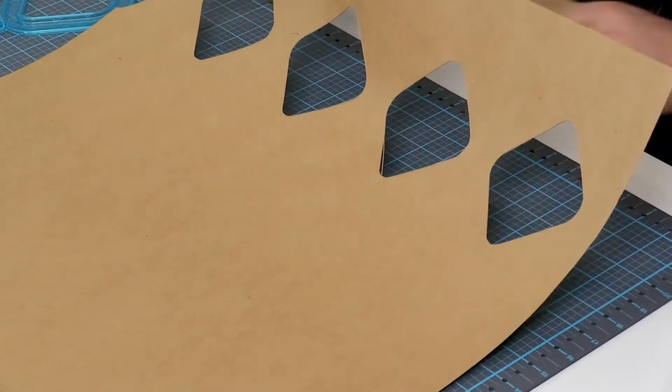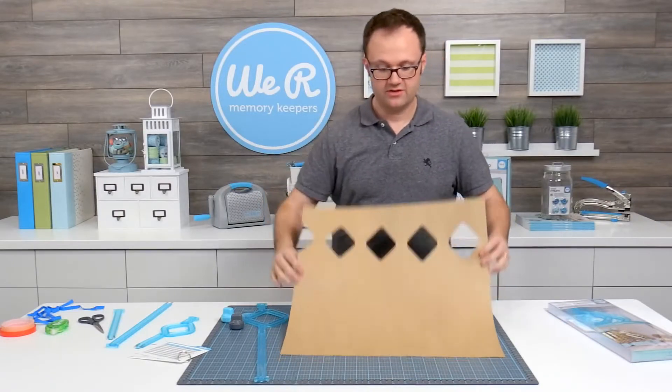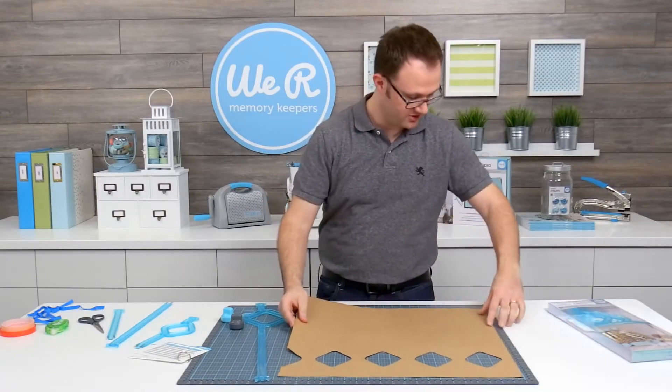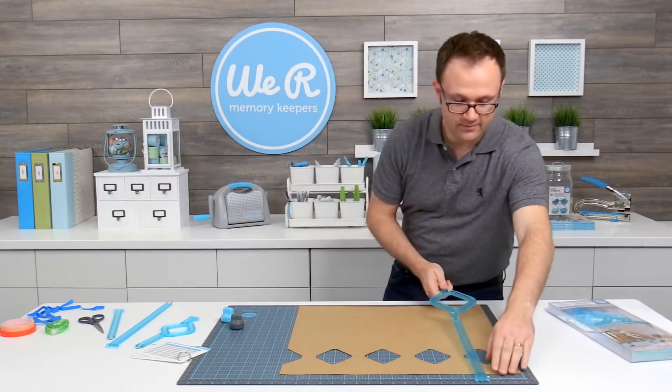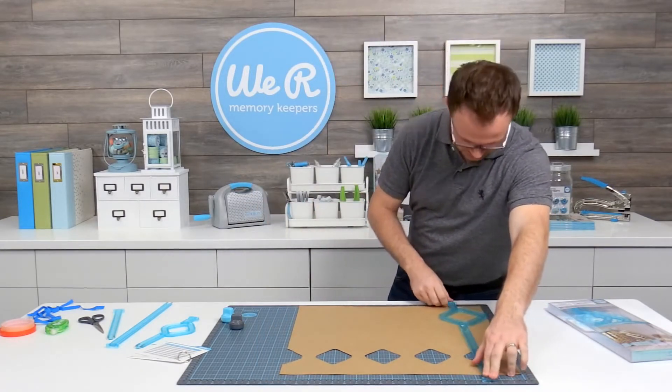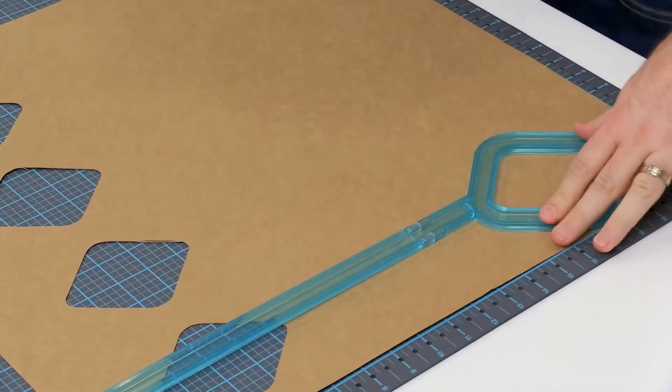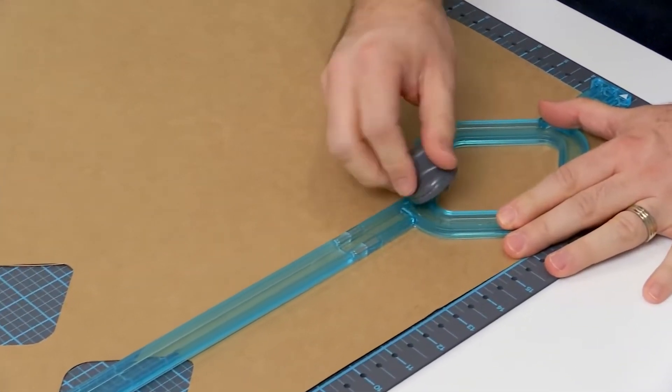Perfect. Now, just like with our punch boards, you're going to flip your paper over and now you're going to align it at the bottom and you're going to repeat just what we did before. Only this time, since we've already done the scoring, you don't need to score again. You only need to do the cutting. So you're going to cut.